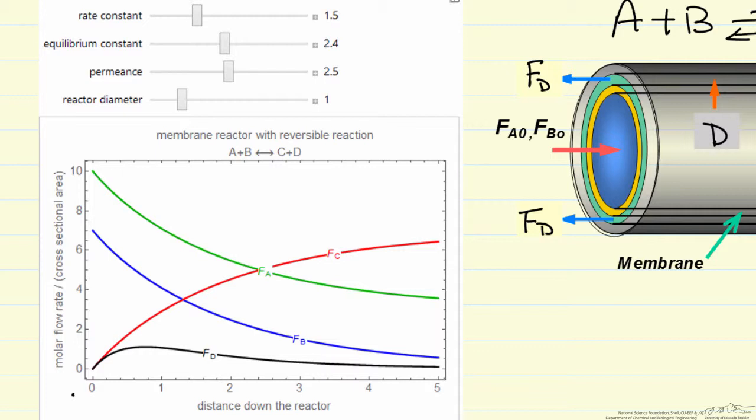Now you can see in the case where we have significant permeate through the membrane, the flow rate of D is much lower than the flow rate of C, even though the stoichiometry is one-to-one, because we're removing D through the membrane, as a result we're getting a higher conversion of C.